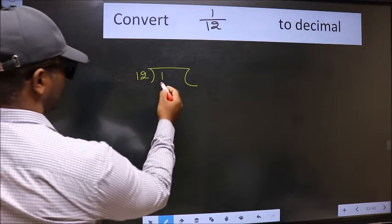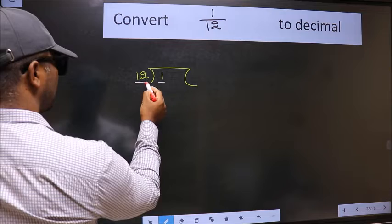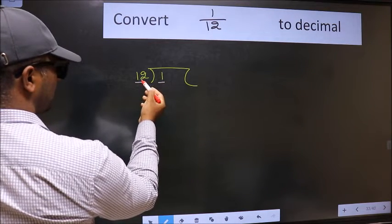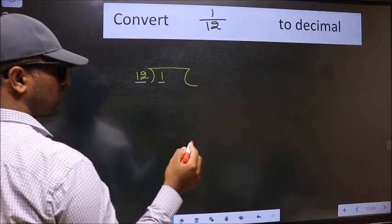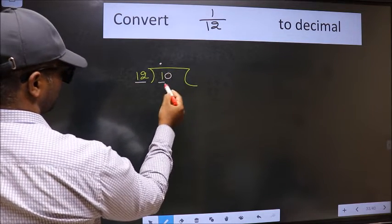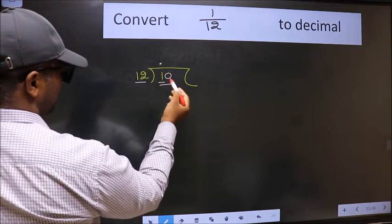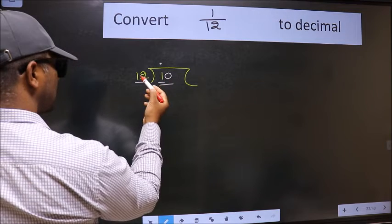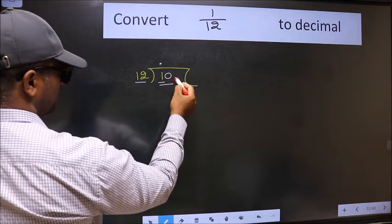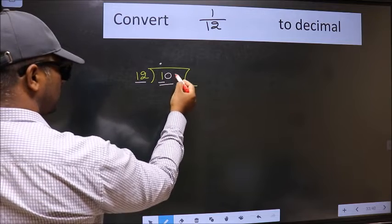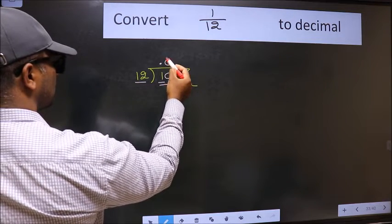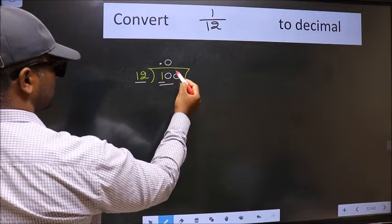Here we have 1 and here 12. Since 1 is smaller than 12, we should put a dot and take a 0. Now we have 10, but 10 is still smaller than 12. So we get one more 0, and the rule is to put 0 here to get one more 0 here.